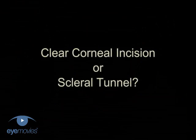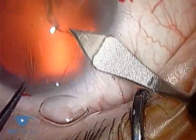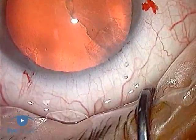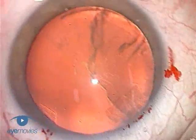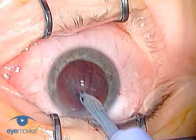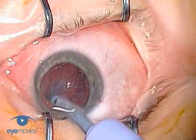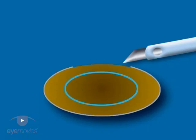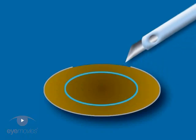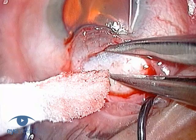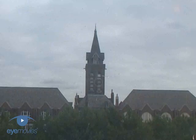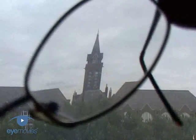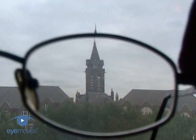When considering small incision surgery, the advantages of a clear corneal incision over a scleral tunnel include its speed of construction, operating in a bloodless field, greater manoeuvrability of the FACO probe within a relatively shorter tunnel, a steeper and more favourable angle of attack towards the nucleus, avoiding damage to the conjunctiva, and finally the use of the incision as a refractive tool for reducing corneal astigmatism.